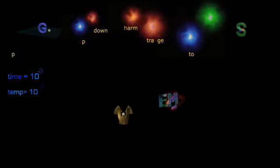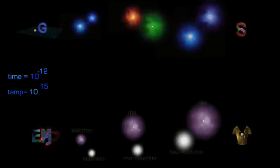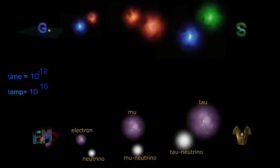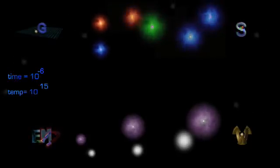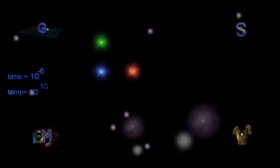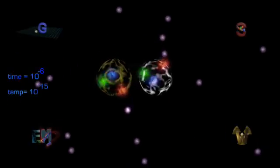At 10 to minus 12 seconds and 10 to 15 degrees, the weak force and electromagnetism separate and we have the four independent forces we know today. At this point all six types of leptons have formed including the electron. At 10 to the minus six seconds, up and down quarks have formed protons and neutrons. All heavy quarks have decayed, all heavy leptons have decayed, all antimatter has disappeared.